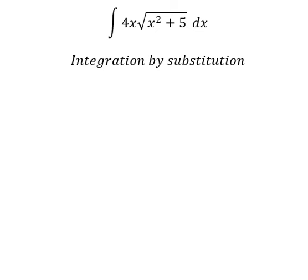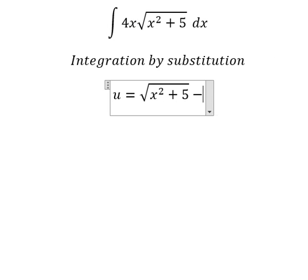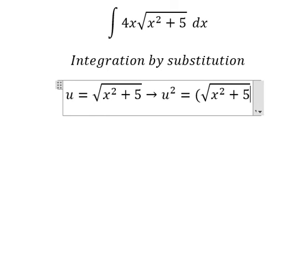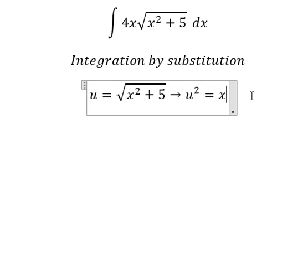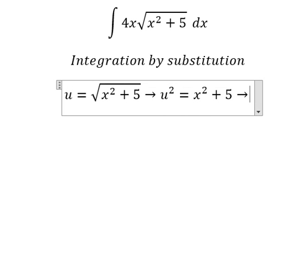So I will put u equals to this one. Later, we put the square for both sides to cancel the square root, and this one we have u squared equals x squared plus 5. Later, we do the derivative for both sides.